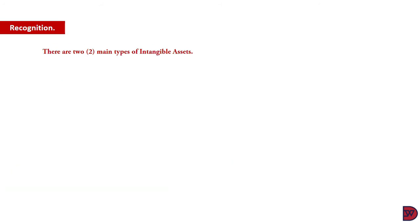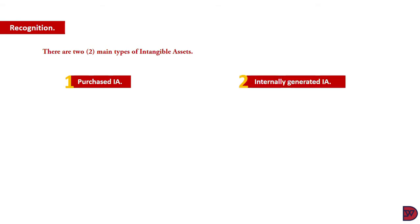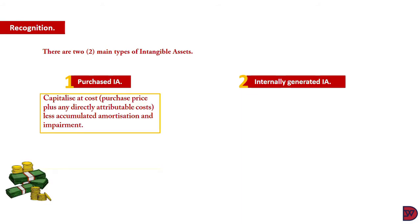So there are two main types of intangible assets. There are other ways with which intangible assets will come into the business — for example, it can come through being purchased separately, business combination, government grants, exchanging an asset for it, and finally through an entity generating it in-house. The recognition criteria relates to the purchase of an intangible asset, and secondly, internally generated intangible assets. For purchased intangible assets, we capitalize the asset at cost, then less any accumulated amortization and impairment losses.